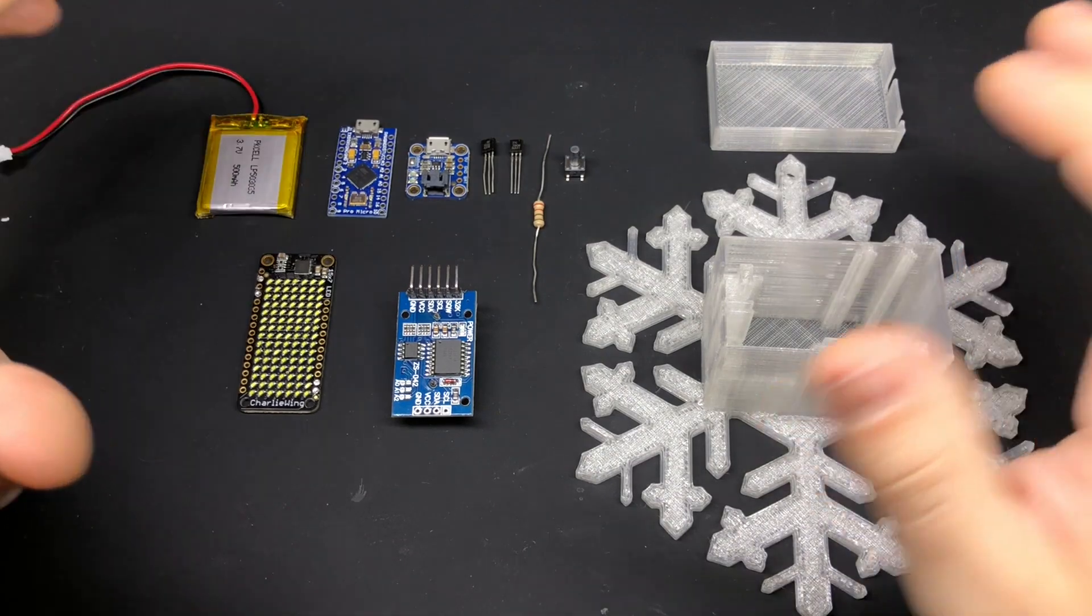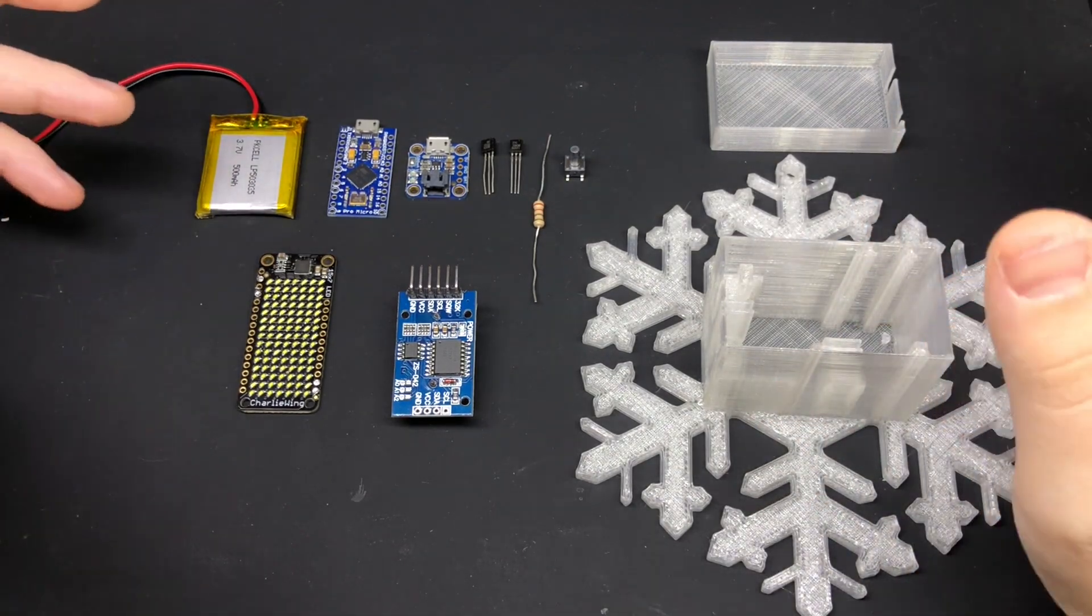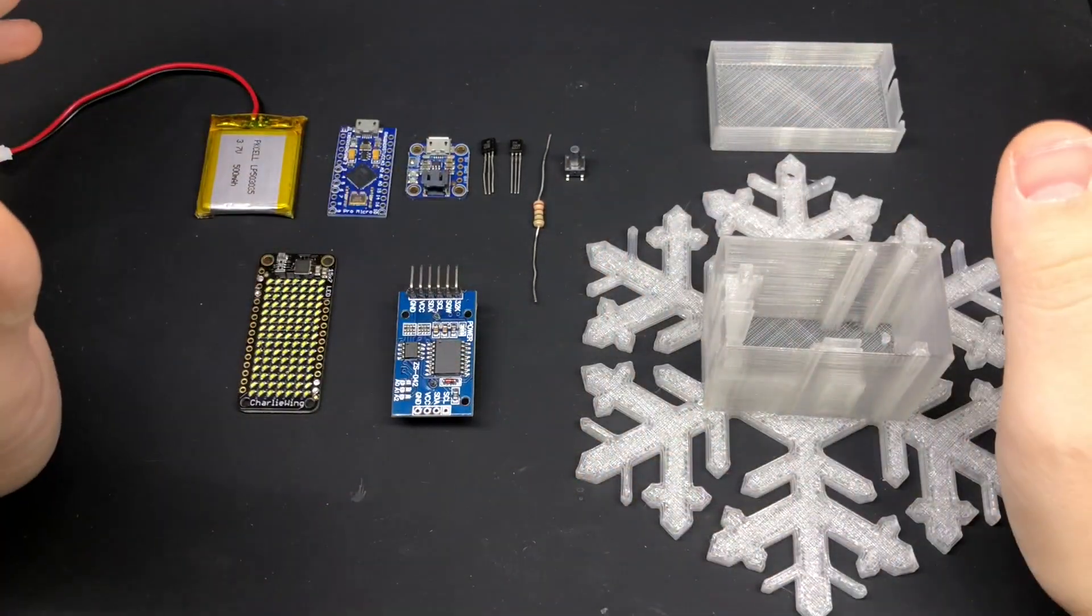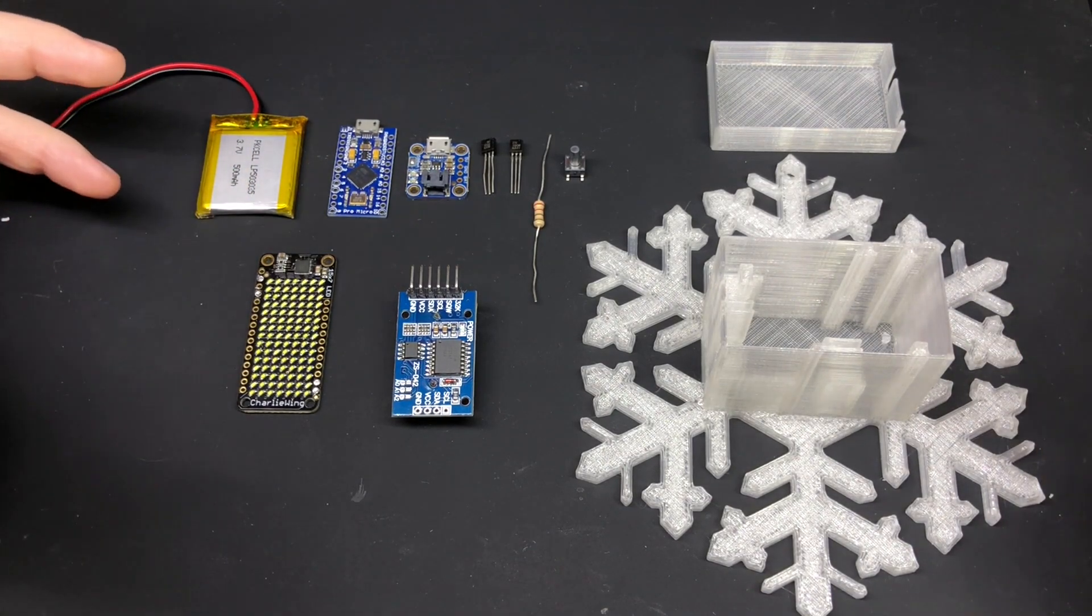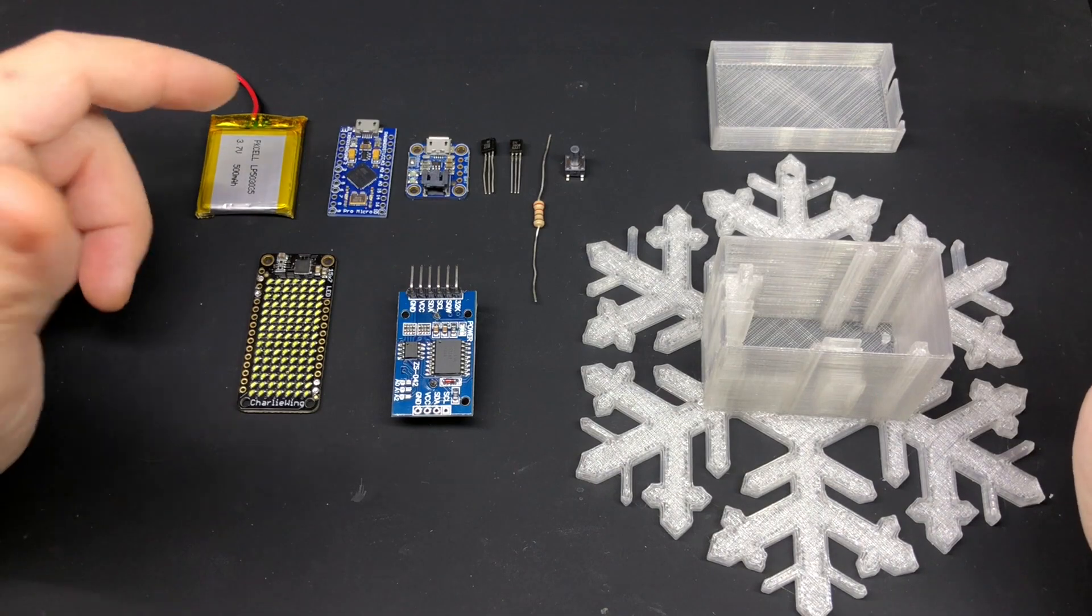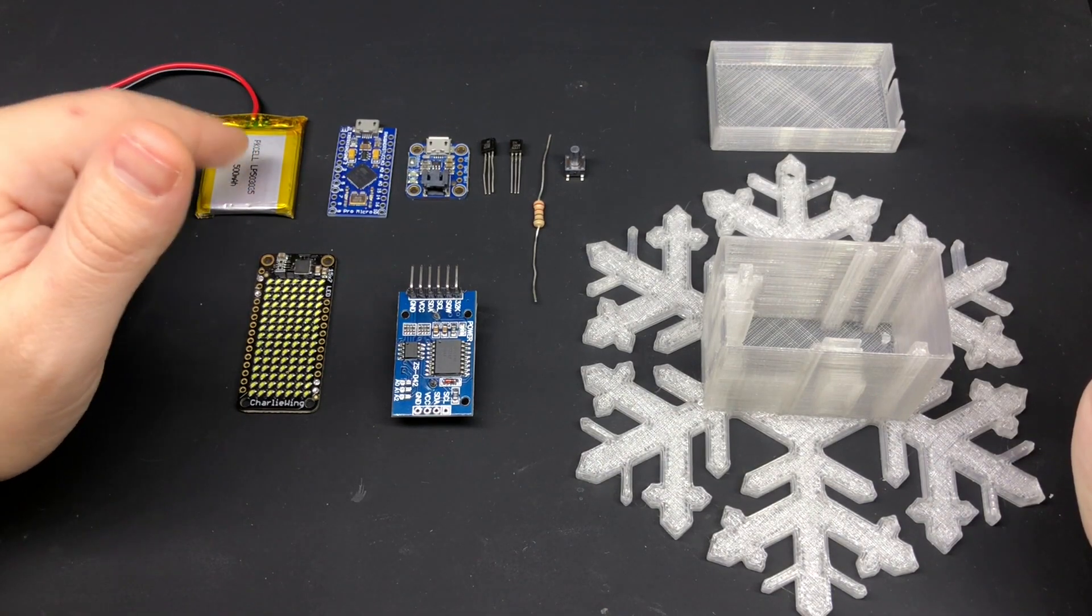So here are the parts that I used. If you look in the description there should be a link to a blog post with a list of all these parts. I've got a 500 milliamp hour battery from Adafruit. There are probably other brands that you can use as well. You'll just have to be aware of the measurements and make sure that they're pretty close to this.